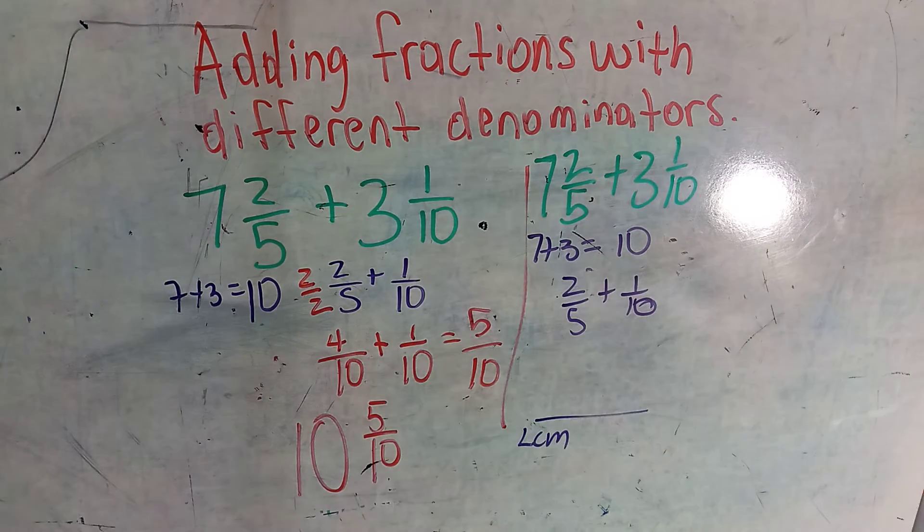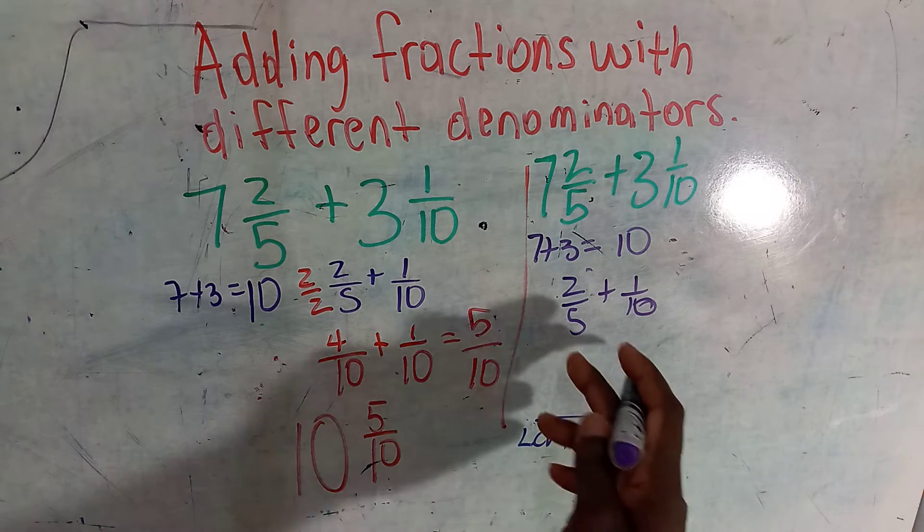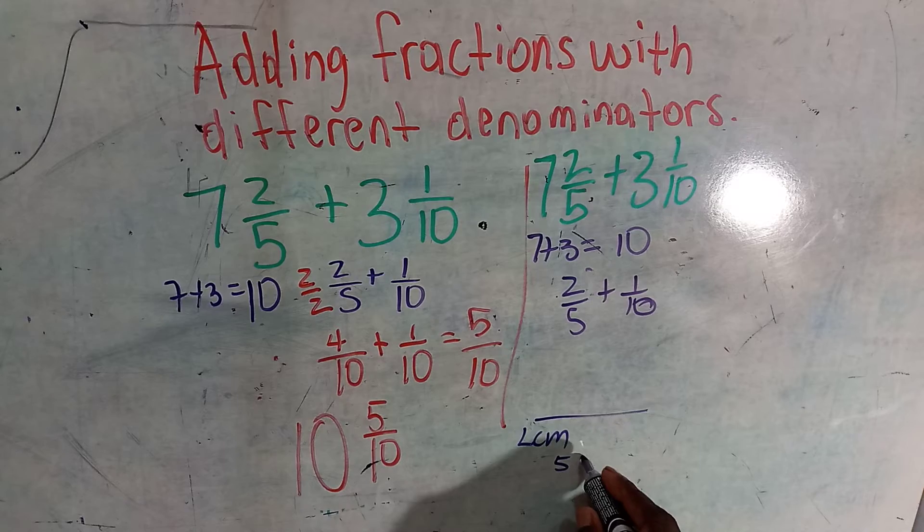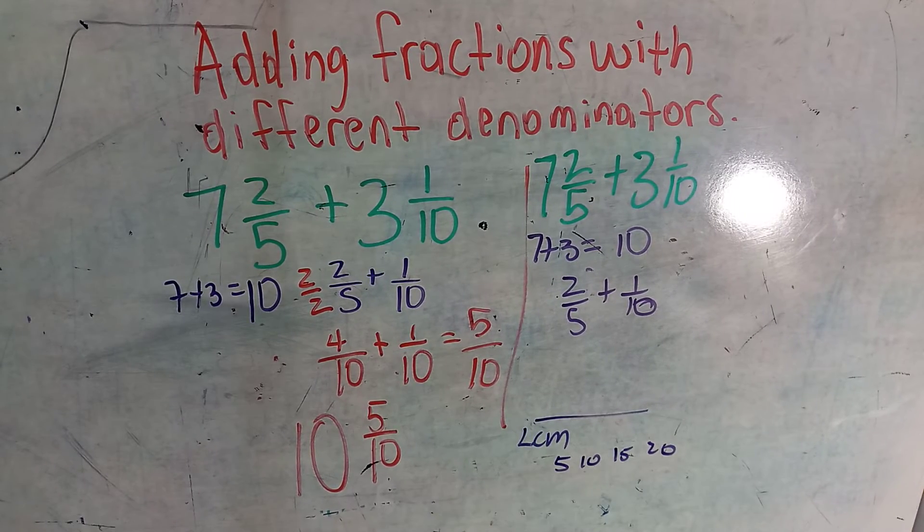Positive integers from one to whatever number, not zero. Zero is neither positive nor negative integer. So what are the multiples of five? The multiples of five are five times one is five, five times two is ten, five times three is fifteen, five times four is twenty. What are the multiples of ten?